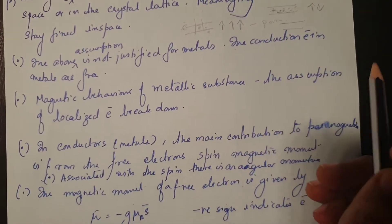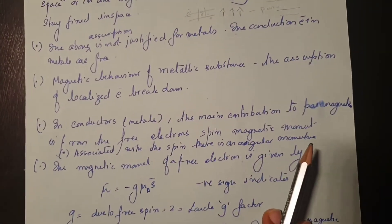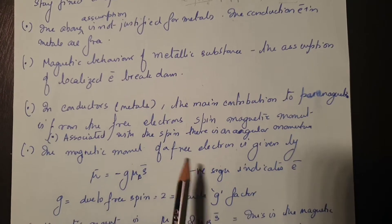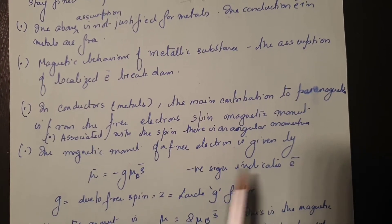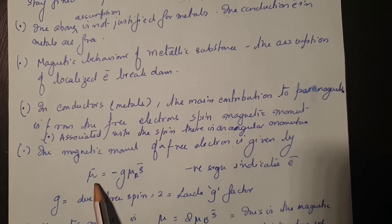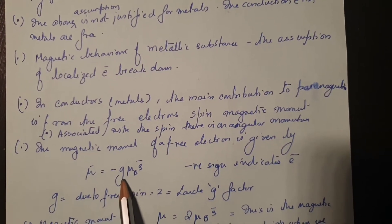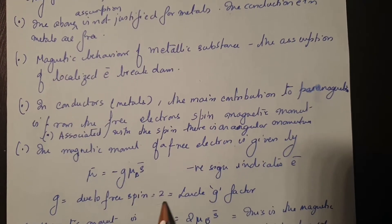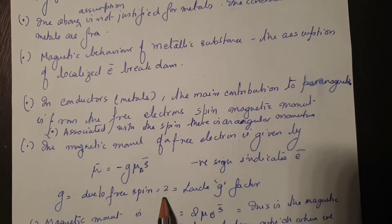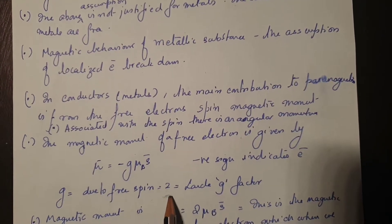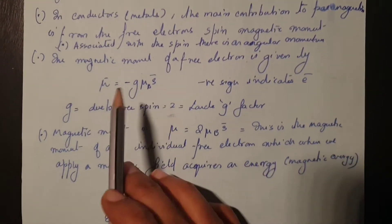The magnetic moment of a free electron is given by the formula: mu equals minus G times mu_B times S. Here G is the Landé g-factor, whose value is approximately 2, and mu_B is the Bohr magneton. The negative sign indicates that it is an electron.